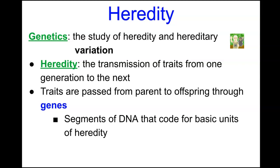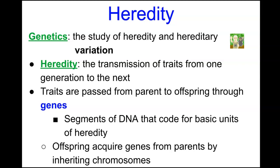Genes are segments of DNA that code for the basic units of heredity — they code for the characteristics. These are the regions on the DNA molecule that can be read and have some sort of phenotypic expression. Offspring acquire genes from parents by inheriting chromosomes.